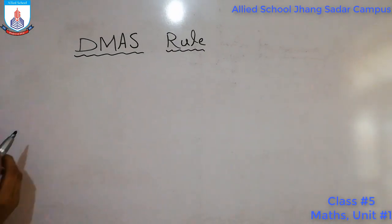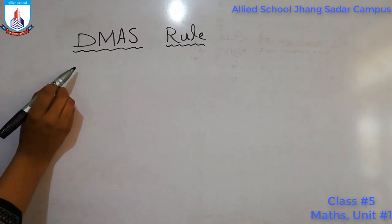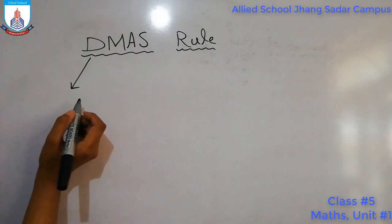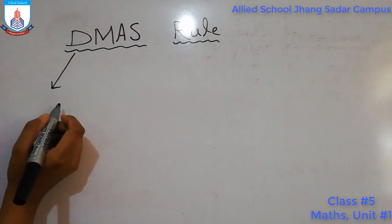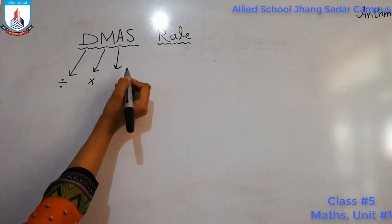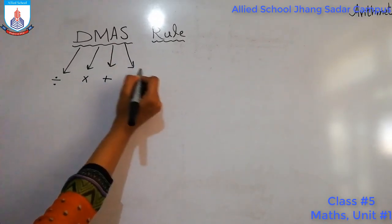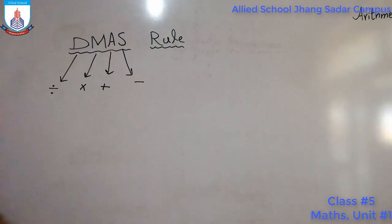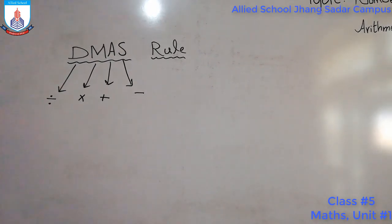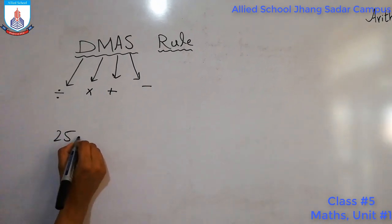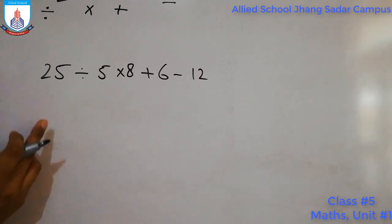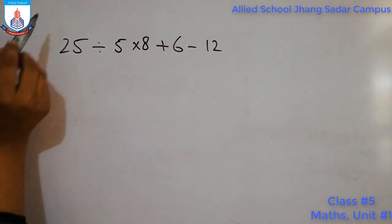Now we are going to learn about the DMAS rule. You may have read the DMAS rule in class. We have 4 operations: D stands for division, M stands for multiplication, A stands for addition, and S stands for subtraction. When we have a question with multiple operations, we follow the DMAS sequence.